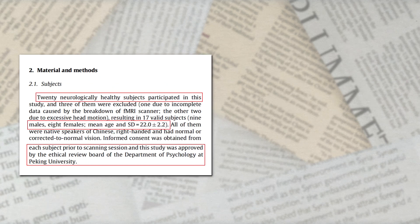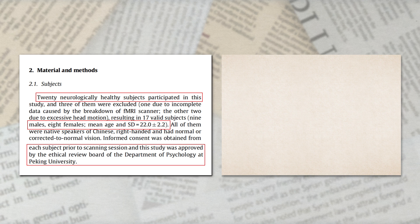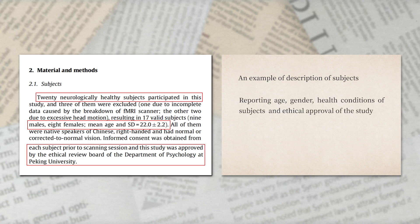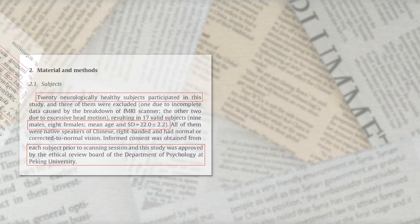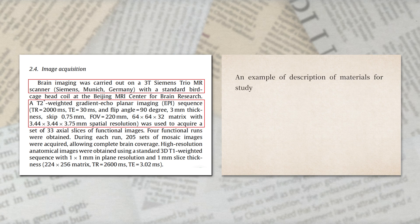Now, just to give you some examples — here is a description of subjects from one of my studies. The part highlighted in red describes the age, gender, and health conditions of the subjects, as well as the ethical approval from the supporting institution. Here is another example about the materials for the study — the highlighted part reports on the brand, functions, and usage of the equipment used.